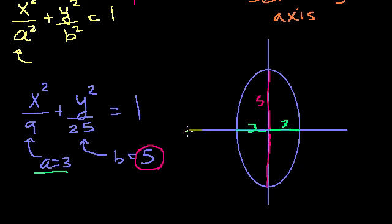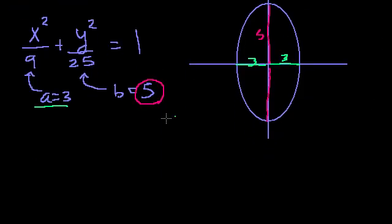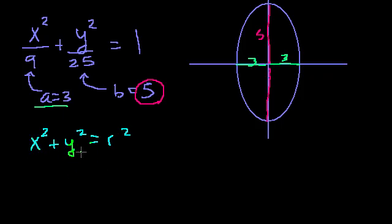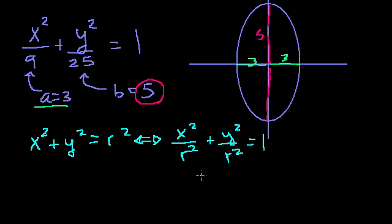Just to show that the circle is a special case of an ellipse: the equation of a circle centered at the origin is x² + y² = r². Dividing both sides by r² gives x²/r² + y²/r² = 1. In this case, a = r and b = r, so the semi-minor and semi-major axes are equal — it's perfectly round.